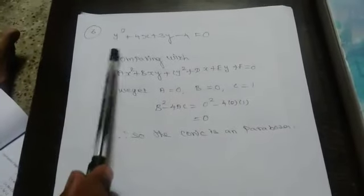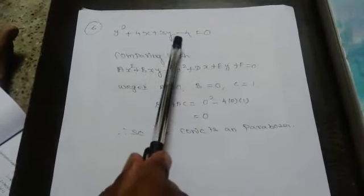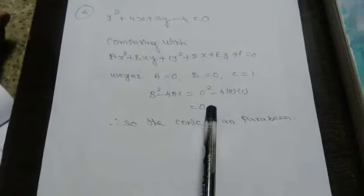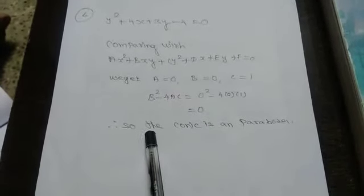Sixth: y² plus 4x plus 3y minus 4 is equal to 0. Comparing to the general conic equation, a is equal to 0, b is equal to 0, and c is equal to 1. Checking the discriminant b² minus 4ac: 0 minus 4 times 0 times 1 equals 0. Since b² minus 4ac is equal to 0, we conclude the given conic is a parabola. That's all.